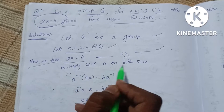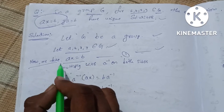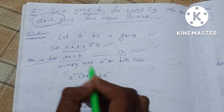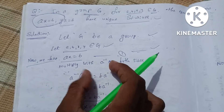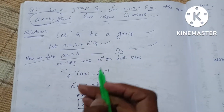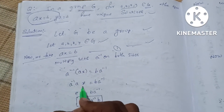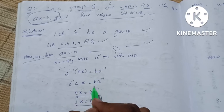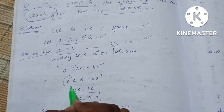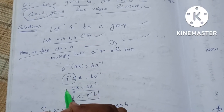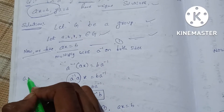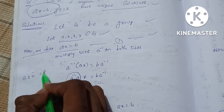Multiply with a inverse on both sides. So, a inverse into ax is equal to b into a inverse. So, a inverse into a into x is equal to b inverse. By the inverse law, a into a inverse is equal to e.